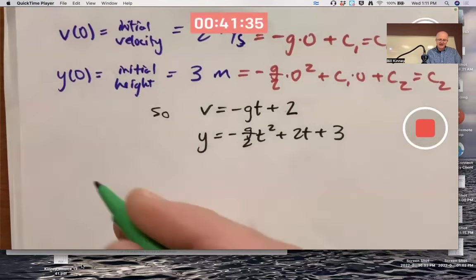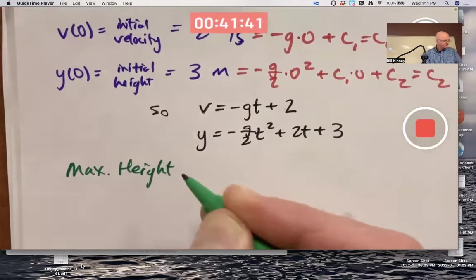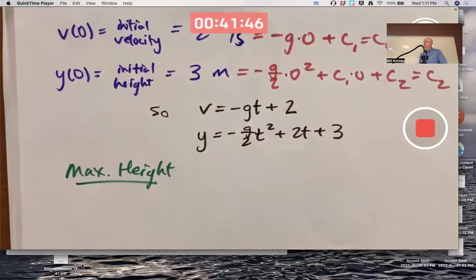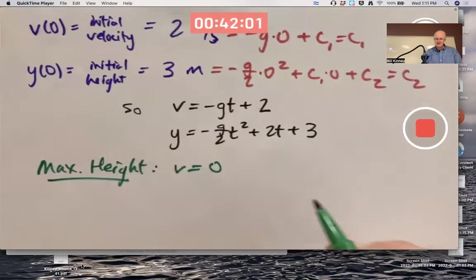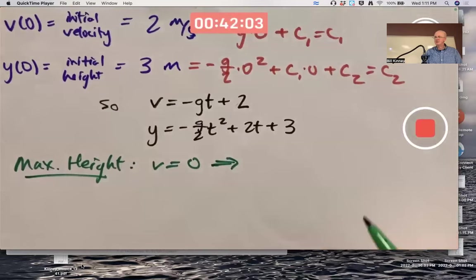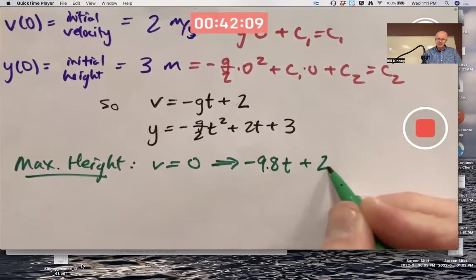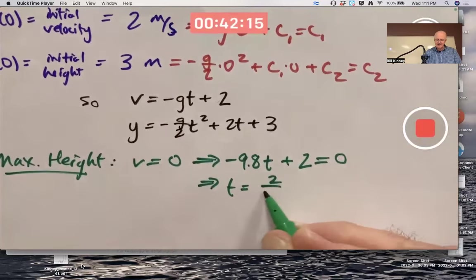And let's go ahead and solve a particular problem now. A particular application. Maybe you want to find the maximum height. To find the maximum height, the method is to figure out the time when it reaches the maximum first. When it's at the highest point, at that instant in time, the velocity is zero.